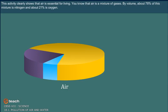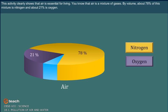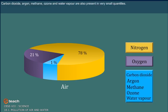You know that air is a mixture of gases. By volume, about 78% of this mixture is nitrogen and about 21% is oxygen. Carbon dioxide, argon, methane, ozone and water vapor are also present in very small quantities.